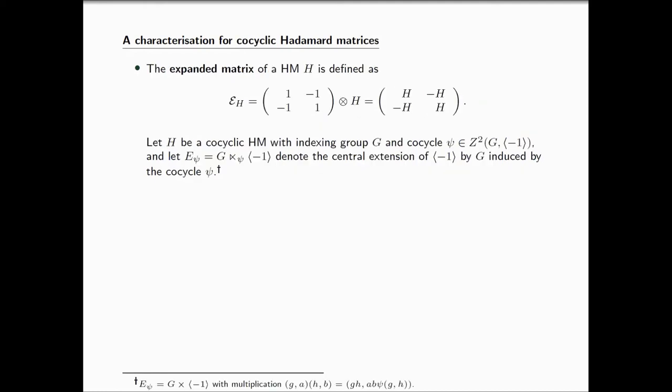I'm ready now to introduce a characterization for co-cyclic Hadamard matrices, but for that I need to introduce this object here which is called the expanded matrix of a Hadamard matrix. What we do is we take the Kronecker product of this matrix and the Hadamard matrix. Let H be a co-cyclic Hadamard matrix with indexing group G, co-cycle psi, and extension induced by the co-cycle. You can think of the underlying set as precisely the product of G and C2, and the multiplication is given by this expression. We observe the co-cycle here in the actual product of these two elements.